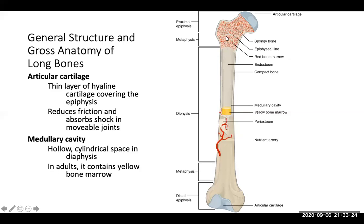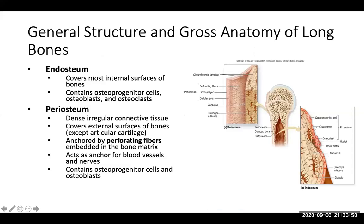The metaphysis is an area where we have the epiphyseal line, which is where the growth plate is located. We also have spongy bone and red bone marrow there, where hemopoiesis — the formation of red blood cells — occurs. Nutrient arteries travel throughout bones because bones are vascularized; they have blood flowing through them. The endosteum covers most internal surfaces of bones, including the inside of the medullary cavity.